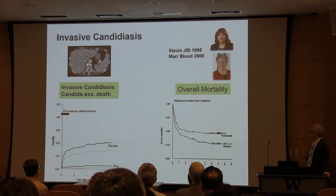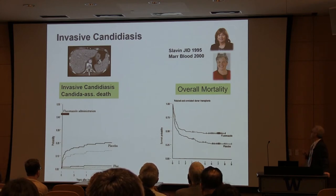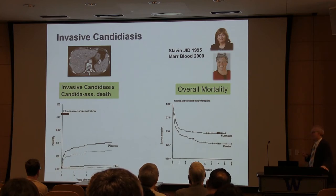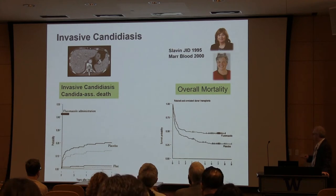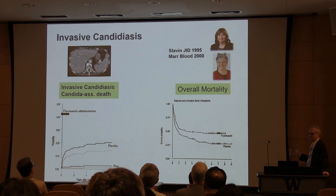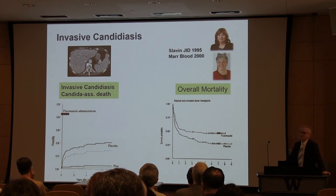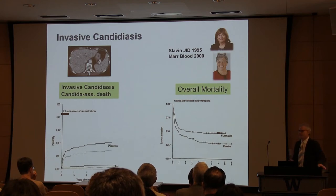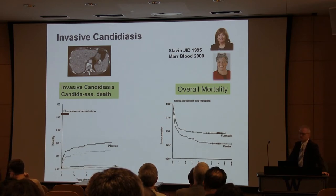Invasive candidiasis used to be a major threat, and early randomized trials done by Monica Slavin and a follow-up analysis by Kieran Martin demonstrated that not only was invasive candidiasis eliminated in the short term, but this effect had a persistent impact for more than seven to eight years. These patients continued to have even improved mortality — a remarkable result. This paper was quoted quite a bit as it demonstrated for the first time the lasting effect of an early intervention.